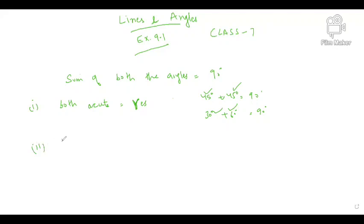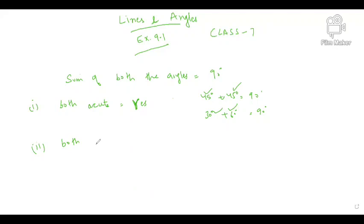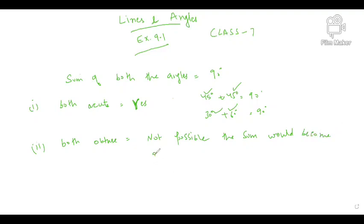The second part asks: is it possible that if two angles are complementary to each other, both angles would be obtuse? The answer is absolutely no — not possible. Because the sum would become greater than 90 degrees, so it would not remain complementary.